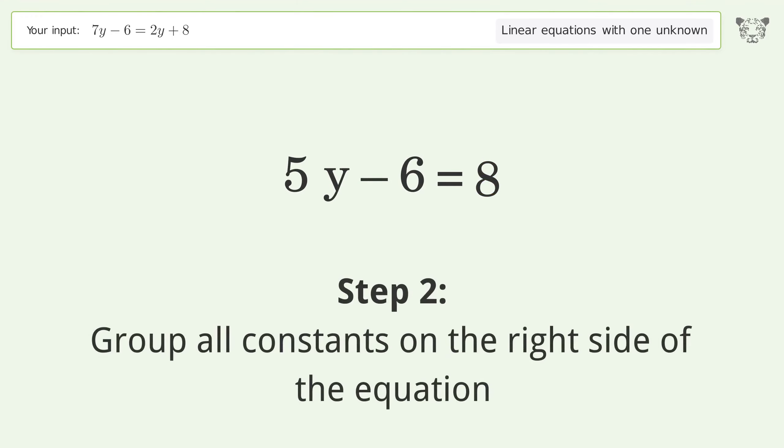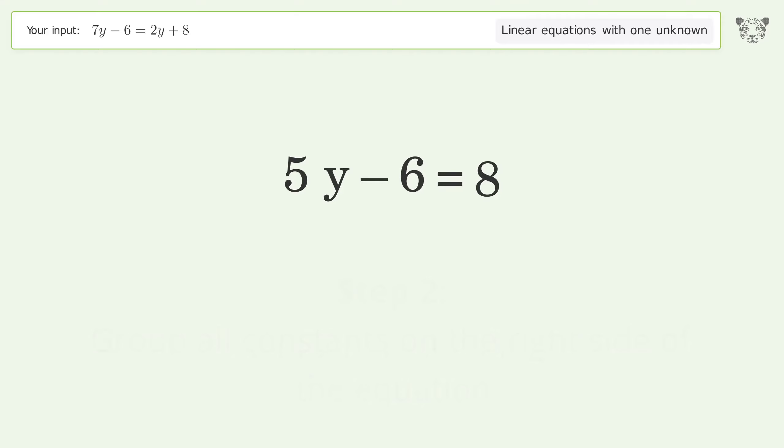Group all constants on the right side of the equation. Add 6 to both sides. Simplify the arithmetic.